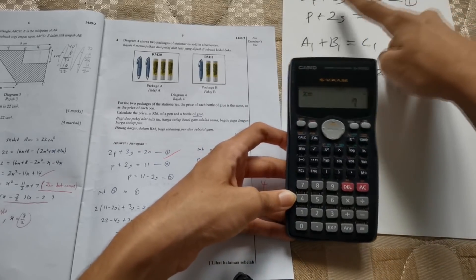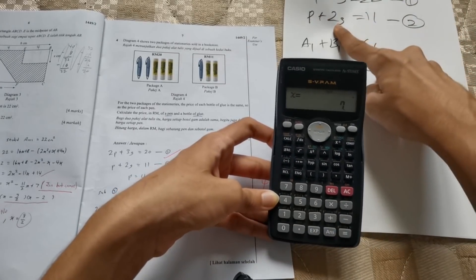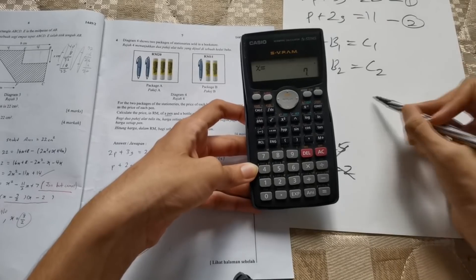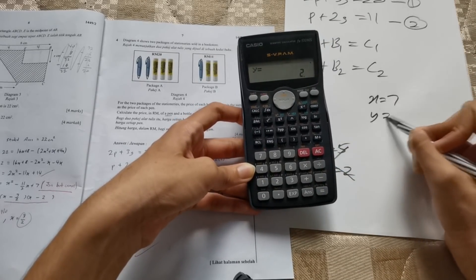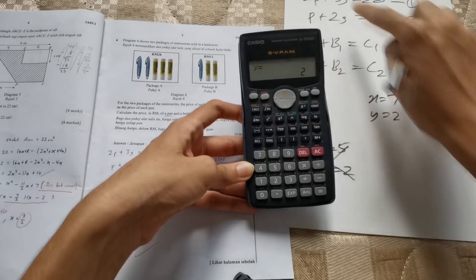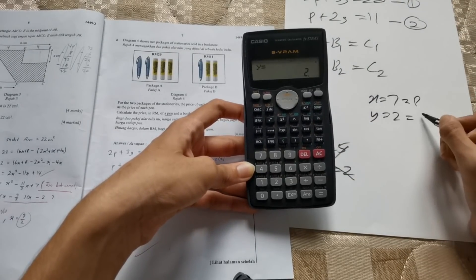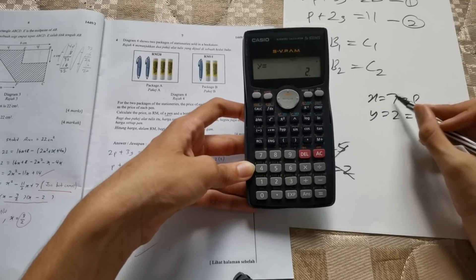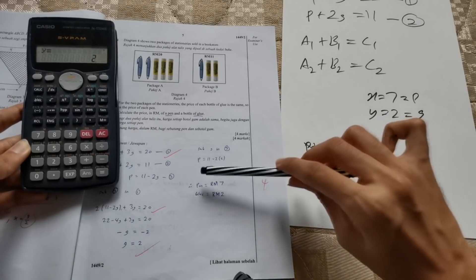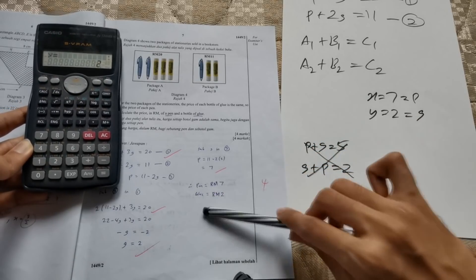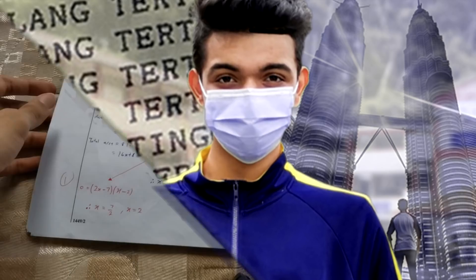And then it will give you X equals to 7 and Y equals to 2. X is your first unknown and Y is your second unknown. So X is P and Y is G. So P is equals to 7 and G is equals to 2. And when you check it with my original answer, indeed, pen is equals to 7 ringgit and glue is equals to 2 ringgit.